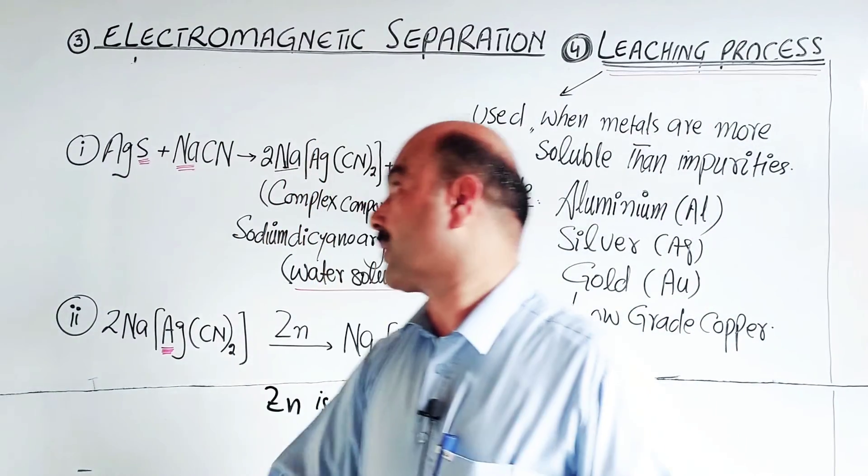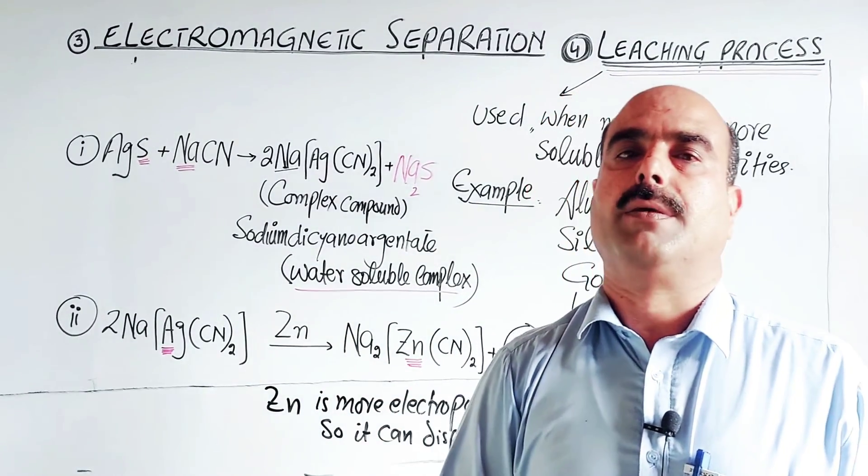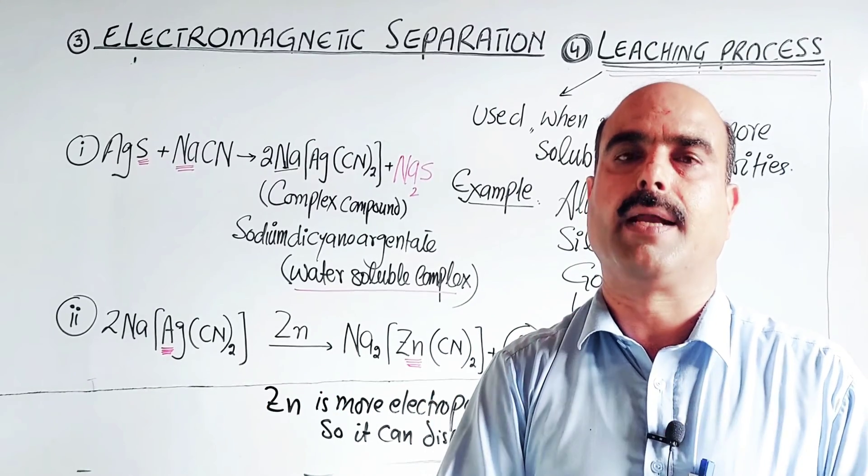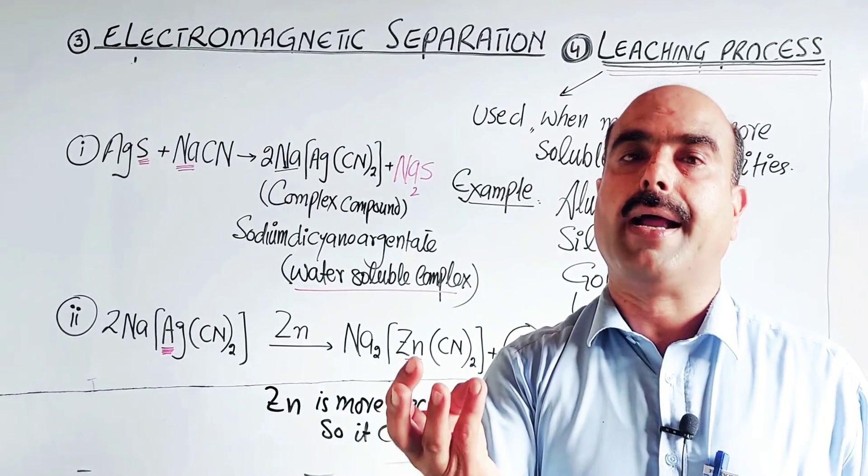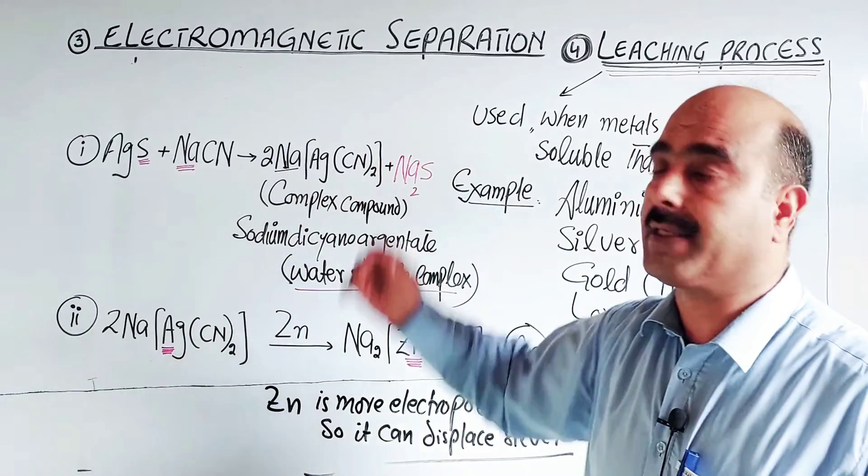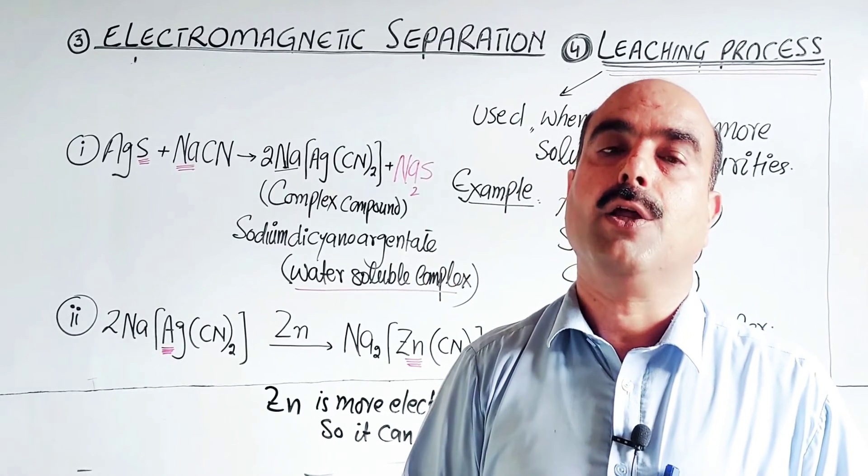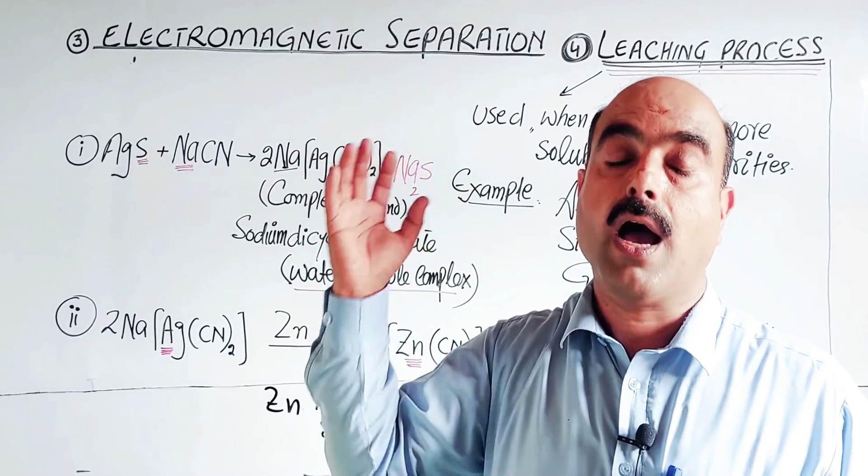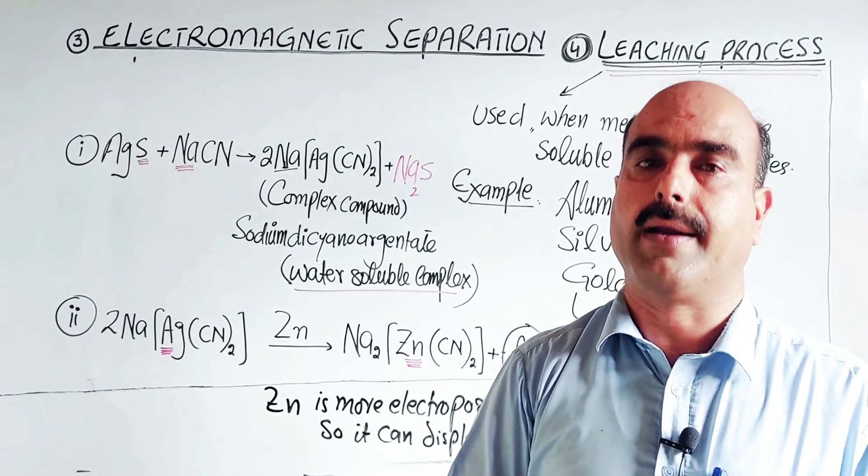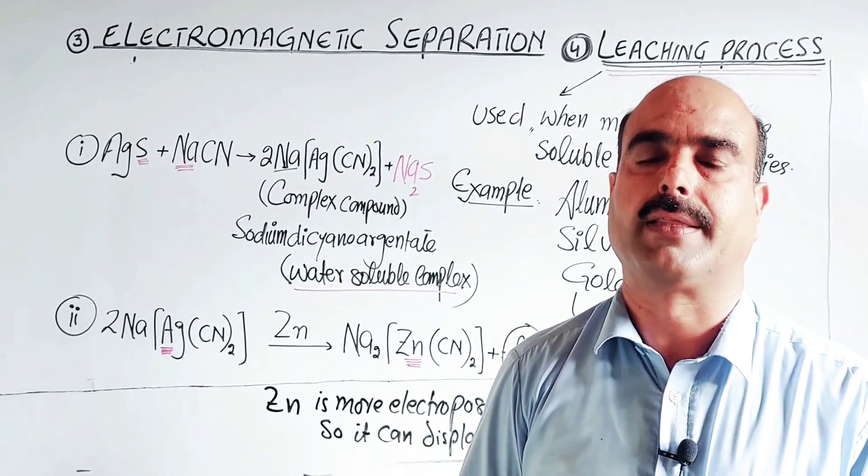Students, these are all about the two processes: electromagnetic separation and leaching process. Again, in ore concentration, impurities are removed and the metallic portion, the desired portion, the useful portion is separated. Methods include hydraulic washing, froth flotation, electromagnetic separation, and leaching. It depends on the nature of ore and nature of impurities. Different methods can be used for ore dressing. Next, we will study the reduction process and metallurgical process. Thanks a lot for watching the video.